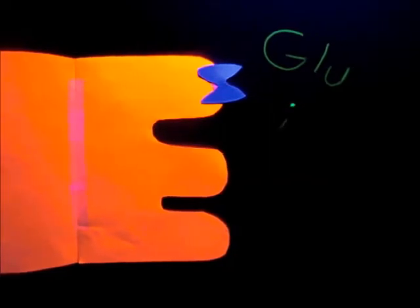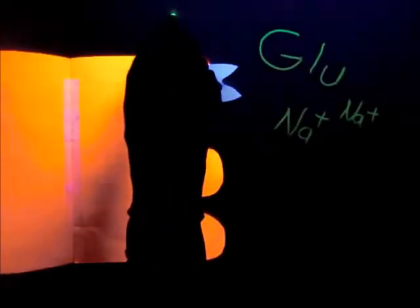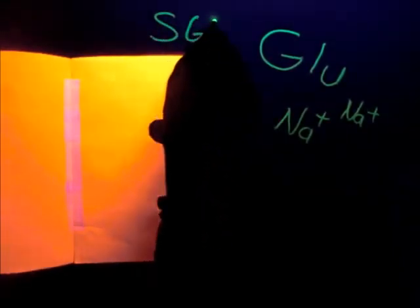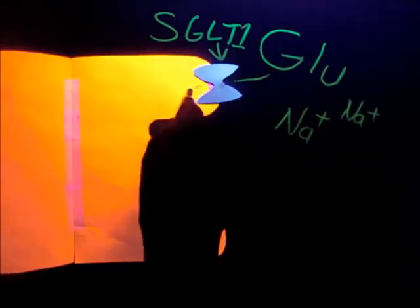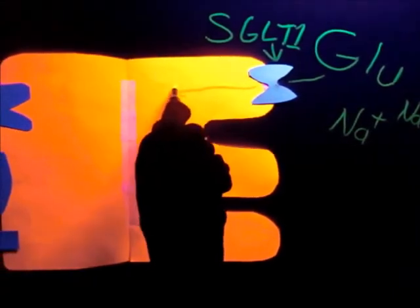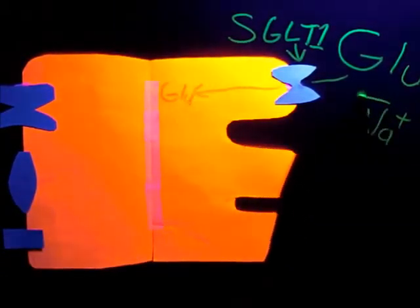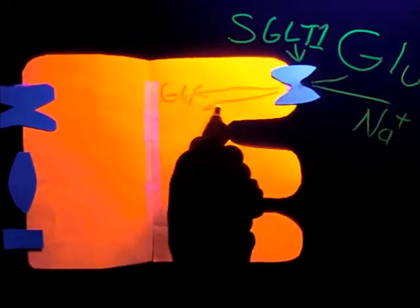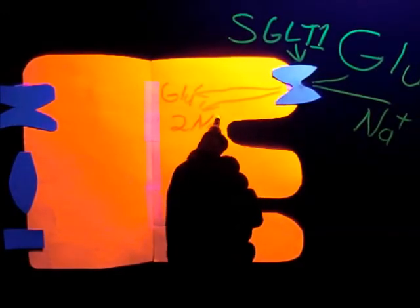Glucose passing along the lumen of the small intestine is absorbed into the epithelial cells or enterocytes lining the gut through transmembrane sodium glucose symporter proteins designated SGLT1. The energetically unfavorable movement of glucose through the apical membrane of the enterocytes is coupled with the energetically favorable movement of two sodium ions from outside to inside along a concentration gradient.